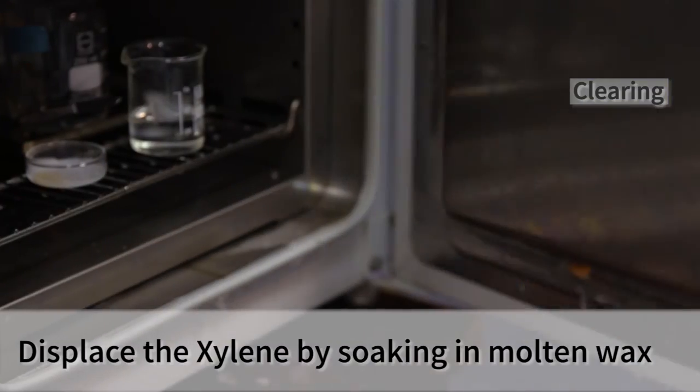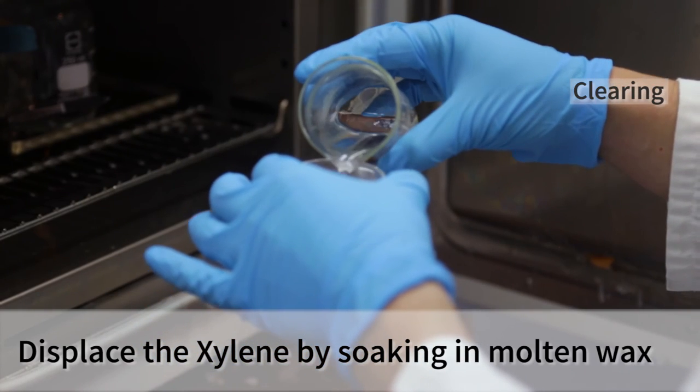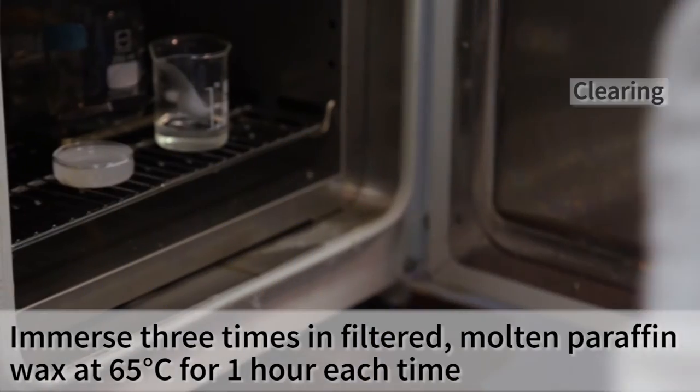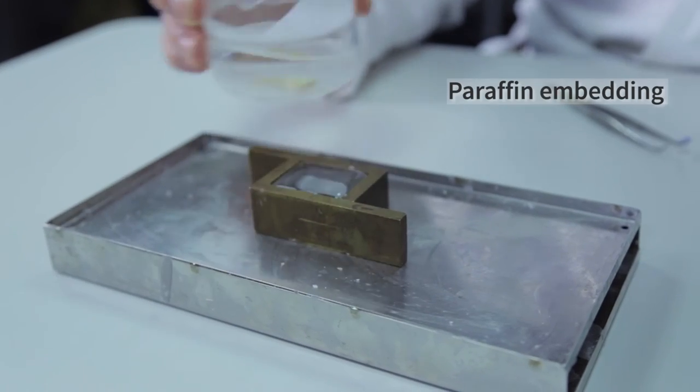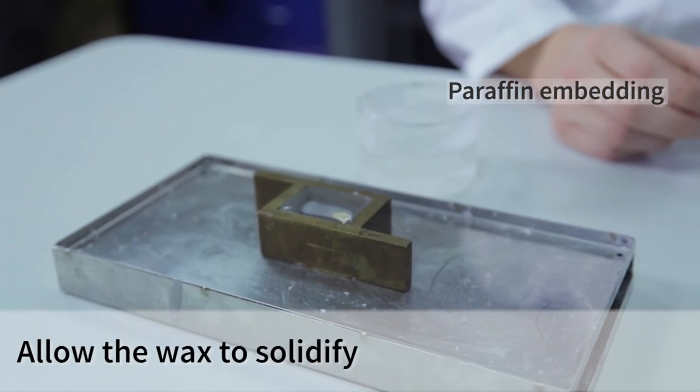The xylene needs to be replaced with paraffin, which infiltrates the tissue. This is typically achieved by immersing the tissue in filtered molten wax three times for one hour each at 65 degrees. The tissue is finally put into a mold and molten wax is added to fill the mold and allow to solidify.